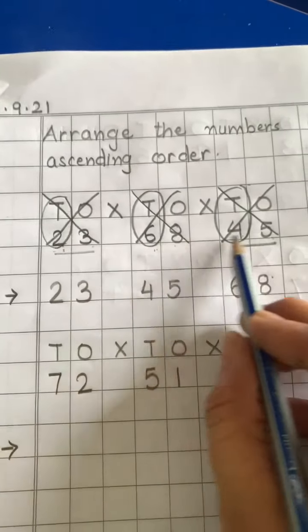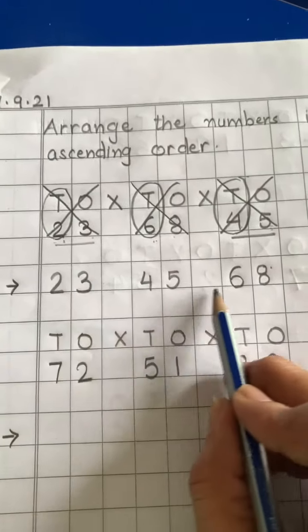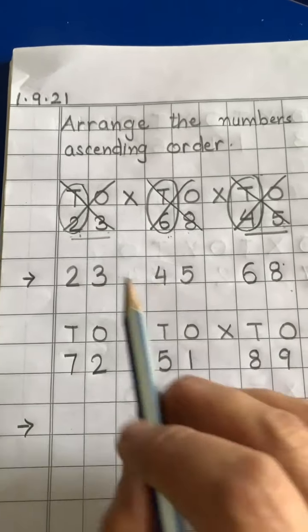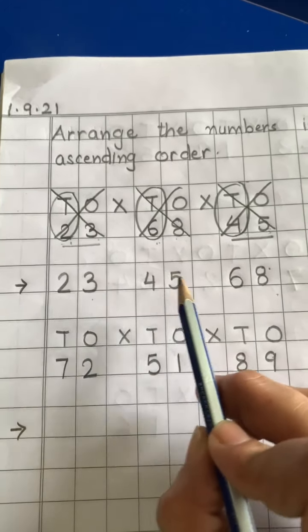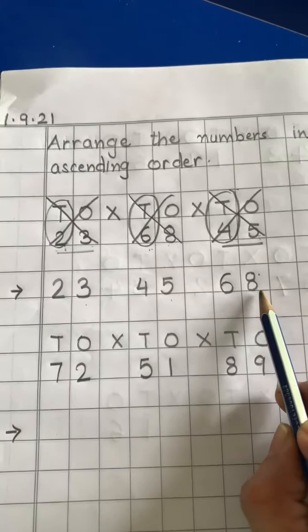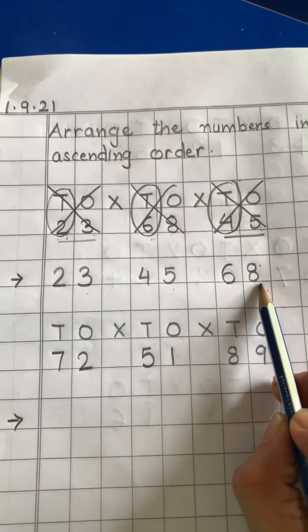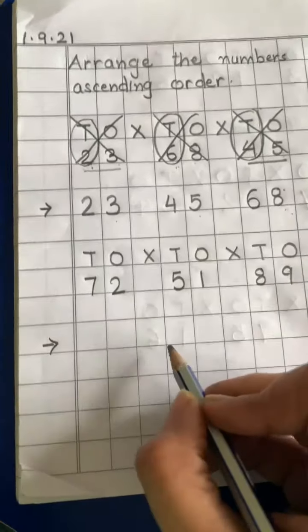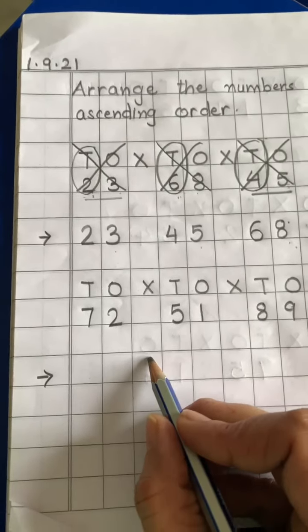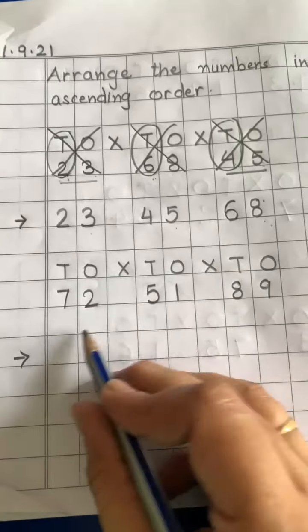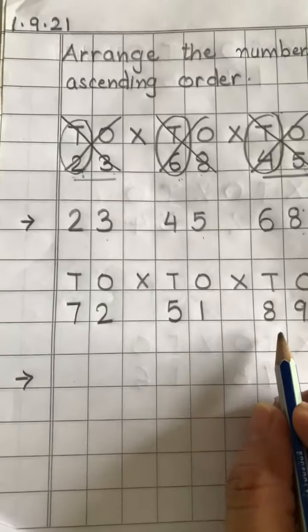Aap in numbers ko humne ascending order me arrange kiya hai. Sabse chota number, then usse big number, then biggest number. Okay, bachy? In this way, now let's arrange these numbers. In ko bhi arrange karengi. Kaisi karengi?